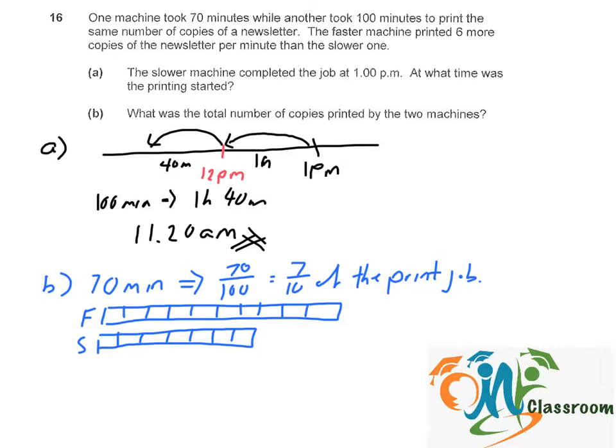So at 70 minutes, the faster one would have printed 70 times 6 more copies than the slower one, which is 420.